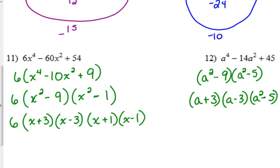Number 12, no GCF there. Factors of 45 that add to give us 14, that would be 9 and 5. So only one of these factors further. a squared minus 9 is a plus 3 times a minus 3. a squared minus 5, it would be great if that were the difference of perfect squares, but 5 is not a perfect square, so that's as far as that one will go.